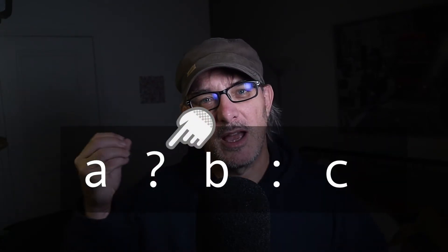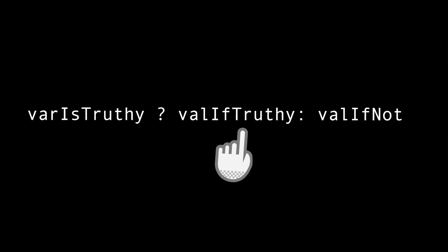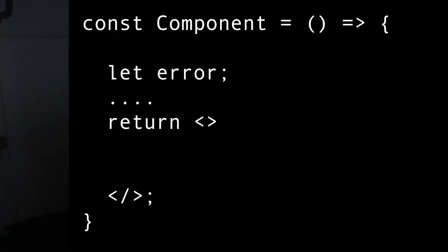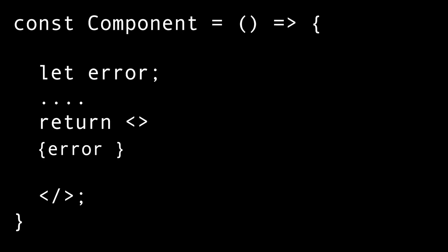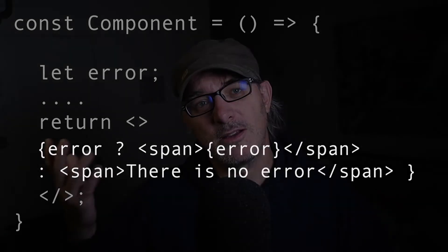Now let's talk about the ternary operator — a condensed IF-ELSE statement. It works with a question mark and a colon: variableTruthy ? 'it is true' : 'it is false'. The operator checks if the variable is truthy; if it is, it returns the first term after the question mark, and if not, the term after the colon. In our error message example, if we also want to show a message when there is no error, we write: error ? <span>{error}</span> : <span>There is no error</span>.